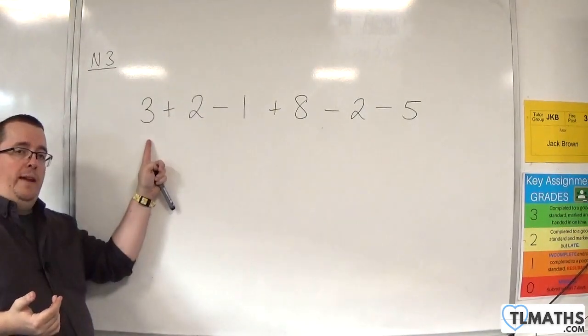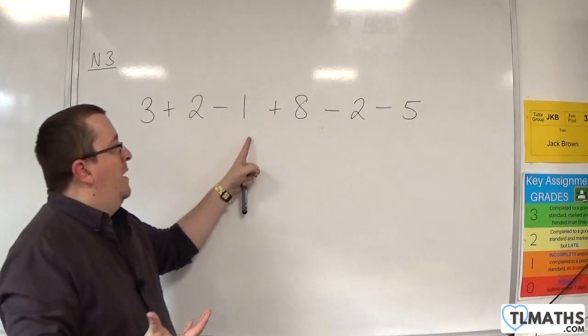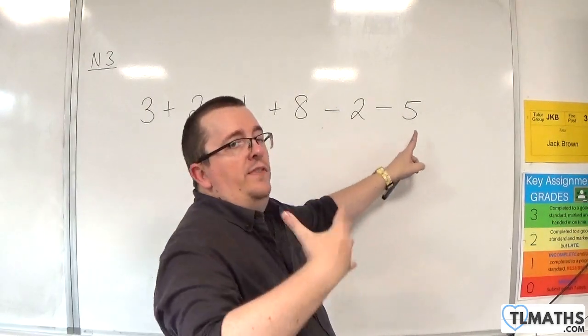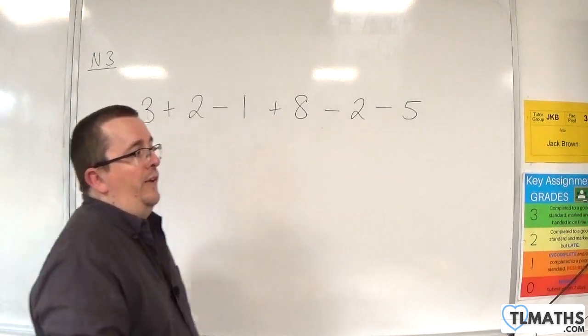I'm going to start with 3, and then I'm going to add 2. Then I'm going to subtract 1, then I'm going to add 8. Then I'm going to subtract 2, then I'm going to subtract 5. That's what it's saying.